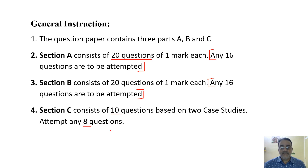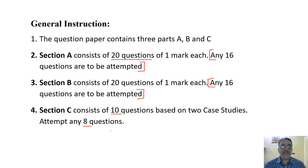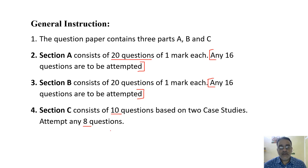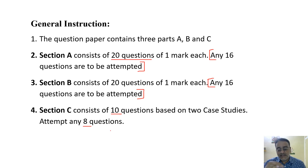So altogether 50 questions are there, but students have to attempt only 40 questions: 16 questions from Section A, 16 from Section B, and 8 questions from Section C. Now let us move towards the chapter-wise distribution of marks with respect to the sample paper.